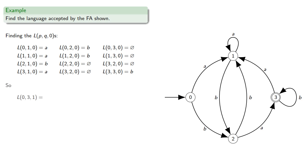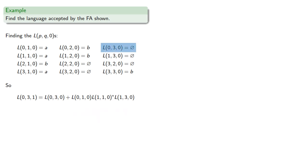Now l(0,3,1), so that's from 0 to 3, through 0 or less, plus union, 0 to 1, loop, and then on to 3. So we know l(0,3,0), that's the empty language, l(0,1,0), that's a. The loop is a star, and l(1,3,0) is the empty language.